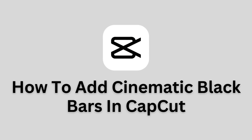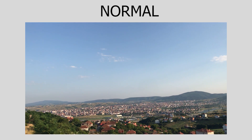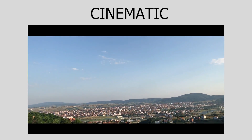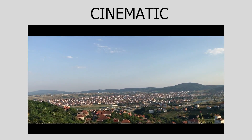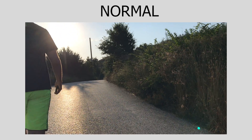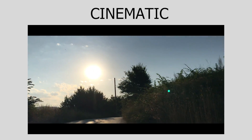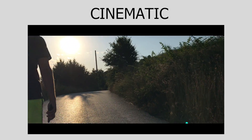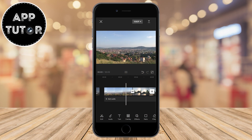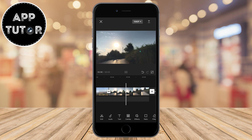Let's learn how to add cinematic black bars to your videos in CapCut and give your videos a movie-like look. Cinematic black bars, also known as letterboxing, are horizontal bars that appear at the top and bottom of a widescreen video or movie when it is displayed on a screen with a different aspect ratio. They are often used to enhance the cinematic experience, as the wider aspect ratio can provide a more immersive and visually stunning presentation.